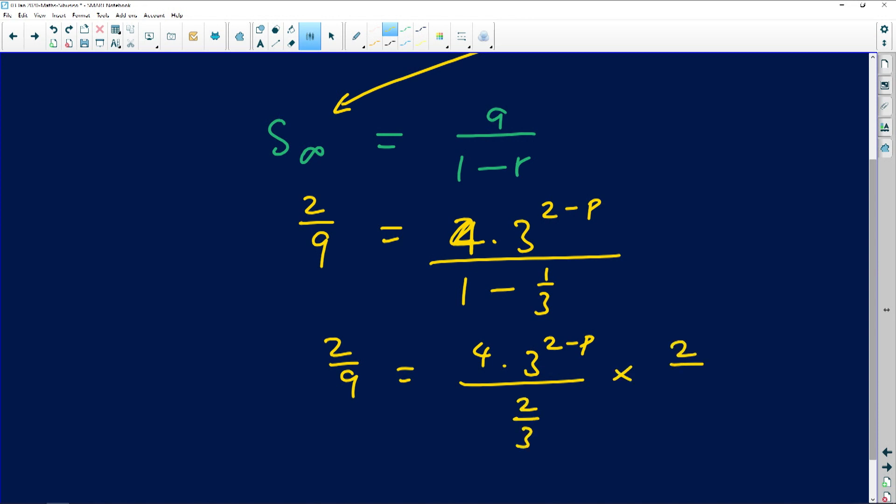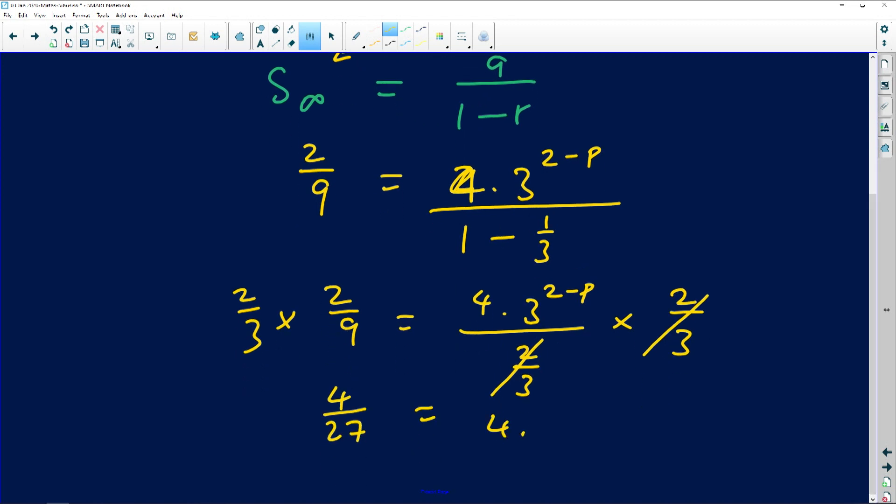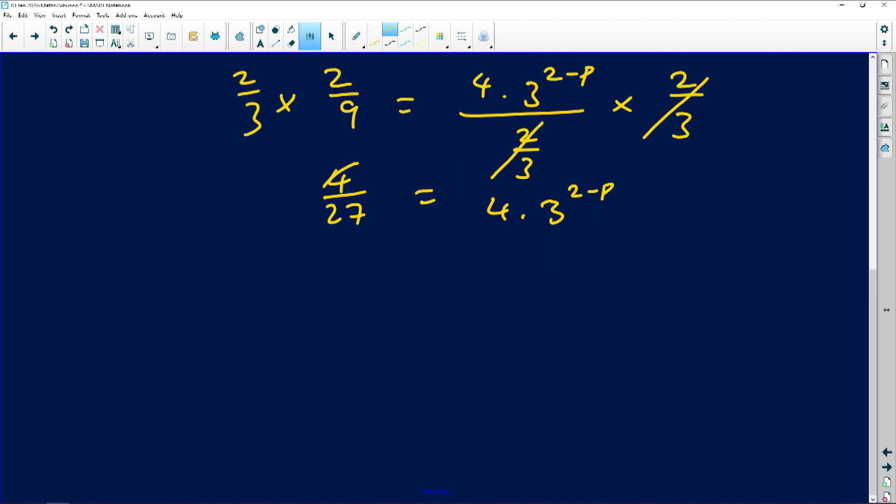So you multiply here by 2 over 3. Also multiply here by 2 over 3. So this will cancel that. And then you're going to have 4 over 27 is equal to 4 times 3 to the power 2 minus p. The 4s will cancel. You've got 1 over 3 cubed equals 3 to the power of 2 minus p. So negative 3 is 2 minus p. So p will be equal to 5.